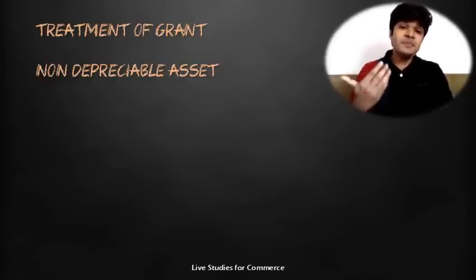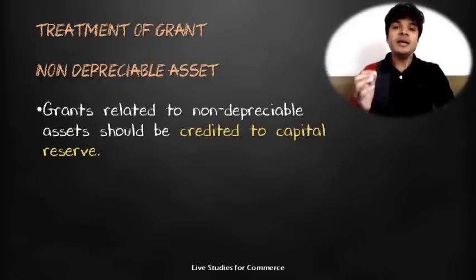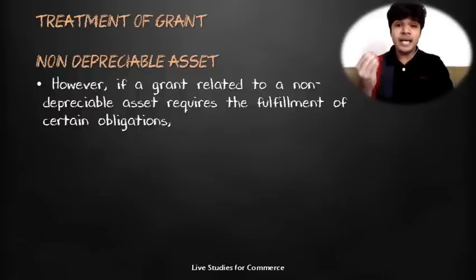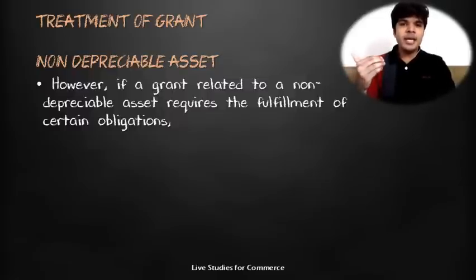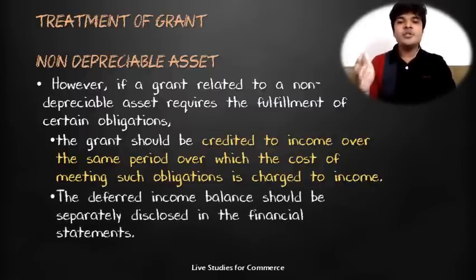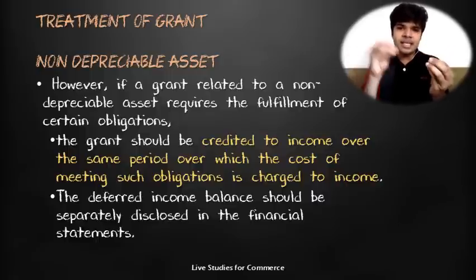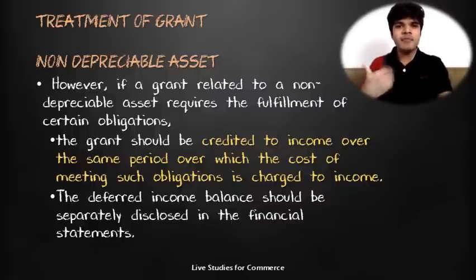If the government grant has been received for a specific non-depreciable asset — say, land — such grant should be credited to capital reserve. However, if a grant related to a non-depreciable asset requires fulfillment of certain obligations, then that grant should be credited to income over the same period over which the cost of meeting such obligations is charged to profit and loss. The deferred income balance should be separately disclosed in the financial statements.